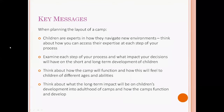The key messages from this: when planning the layout of a camp, there are four key messages. Children are the experts in how they navigate their new environments — thinking about how you can tap into that expertise is the starting point. Thinking about each step of your process and the impact of decisions on both short and long-term development of children. Thinking about how the camp is actually going to function and what it's going to feel like to children of different ages and children with disabilities. And thinking about the long-term impact of the camp and its layout on their development into adulthood. All of these will help inspire different ways that children can participate in the planning and long-term functionality of the camp.